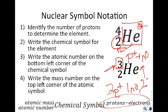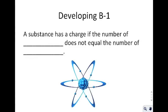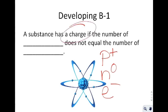If nothing is written in the top right corner for charge, you can assume it is zero — indicating no charge, so the number of electrons equals the number of protons. Writing something in nuclear symbol notation lets you know all of the subatomic particles present in a particular atom. A substance has a charge if the number of protons does not equal the number of electrons. We can throw neutrons out because neutrons are not charged and don't affect the charge in any way. So we say: charge is determined by protons and electrons.